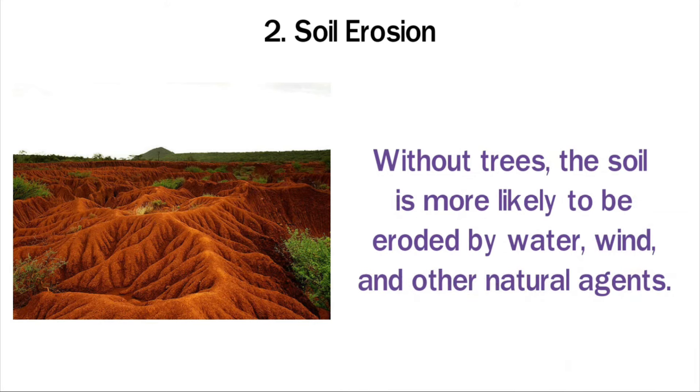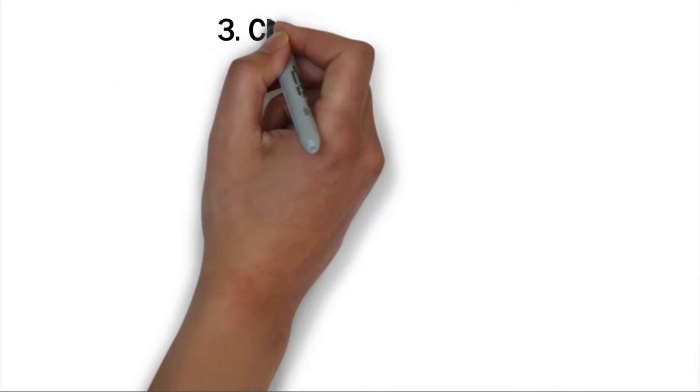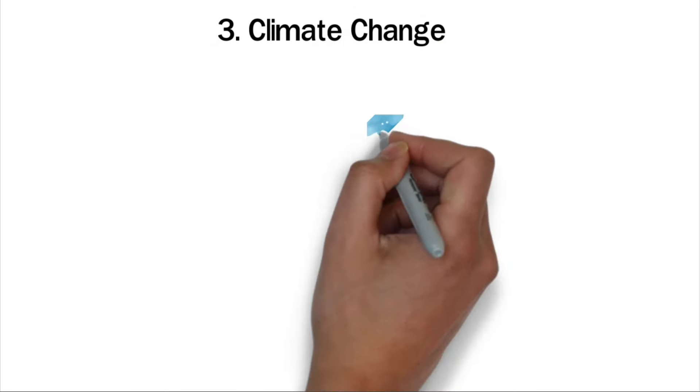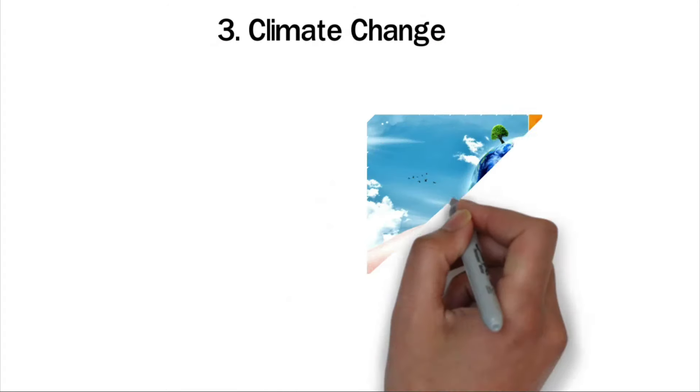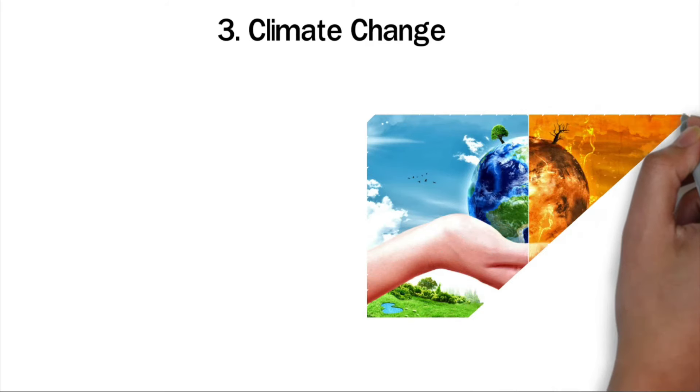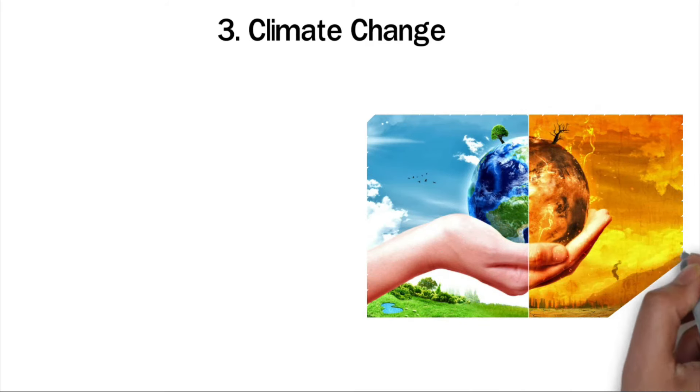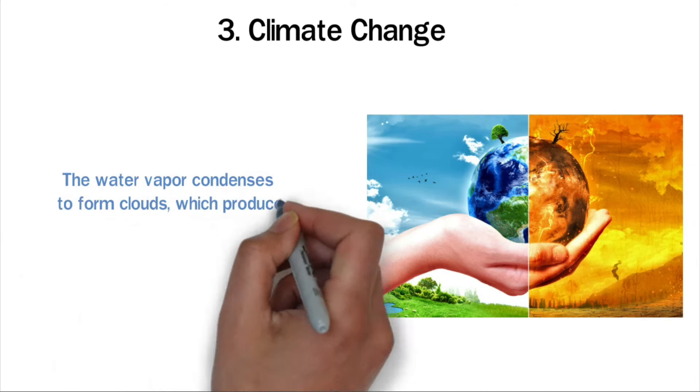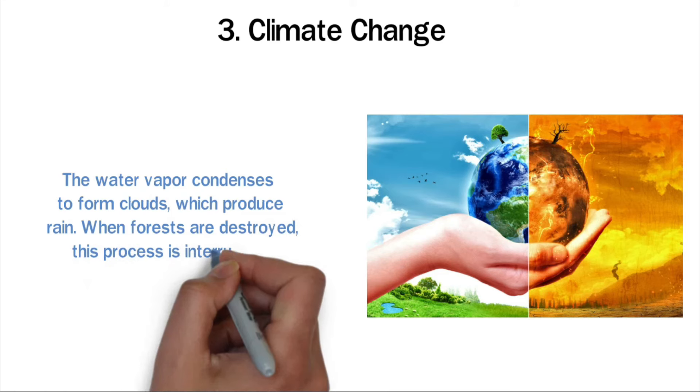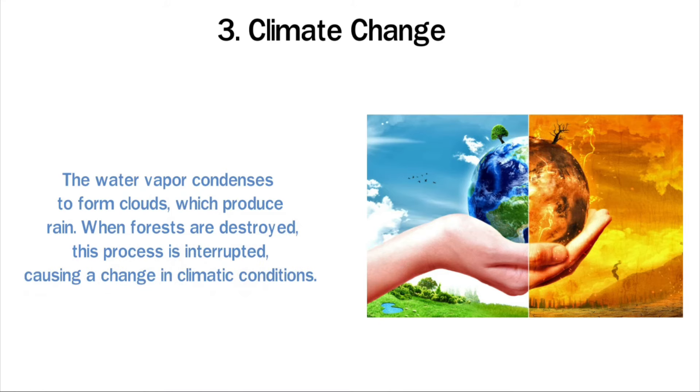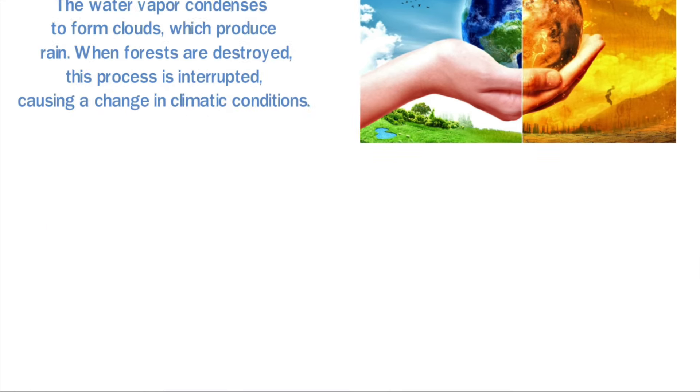Three: Climate change. Deforestation has many negative effects on the climate. Trees are an essential component of the water cycle. They absorb water from the soil and release it into the atmosphere. The water vapor condenses to form clouds which produce rain. When forests are destroyed, this process is interrupted, causing a change in climatic conditions.